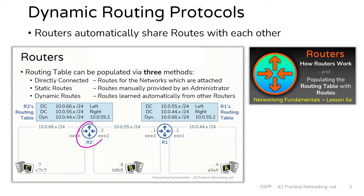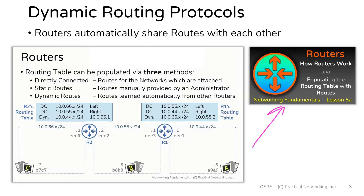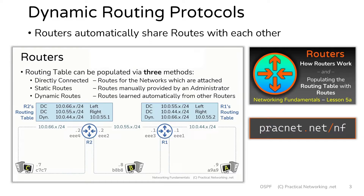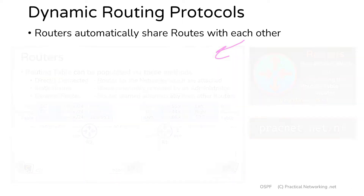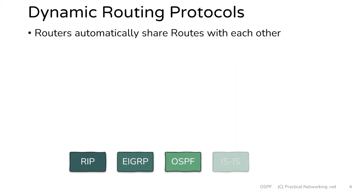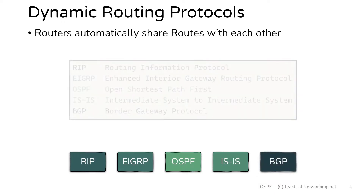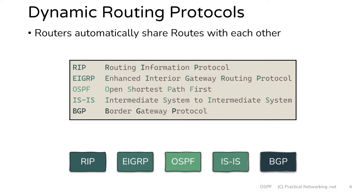With dynamic routes, router 2 and router 1 would automatically talk with each other and share the networks that they know about. The last thing covered on that slide is that there are five major dynamic routing protocols, and each of them differ in how they detect other routers participating in the same dynamic routing protocol and what they share when sharing routes. We're going to talk about all of them and the categories they fall into.